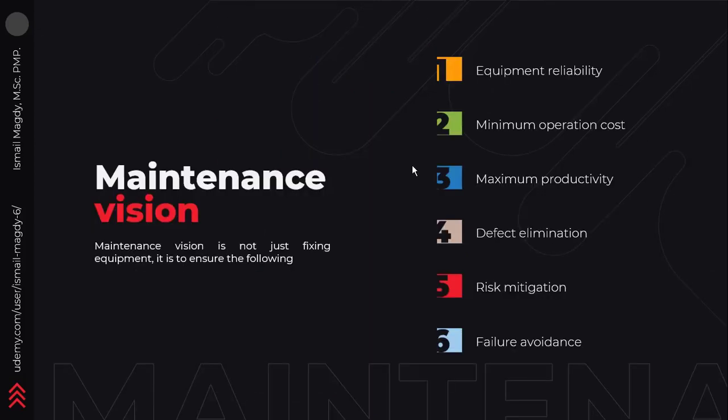So now we understand that maintenance is not just fixing equipment, but the job of maintenance is to provide a reliable and safe plant or facility for the least operating cost. This is by ensuring equipment reliability, which we will discuss in detail in the next lectures. It also means minimizing operating costs by avoiding equipment failure, unplanned maintenance, and collateral damage. Maximizing productivity by minimizing equipment downtime to the lowest possible level and avoiding time wastage. Defect elimination by being proactive and finding out the root causes of failures — and later in this course we will have a full chapter dedicated to root cause analysis. Maintenance also aims to mitigate risks and to avoid failures.